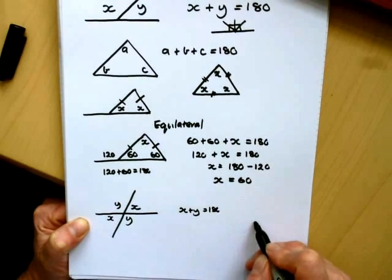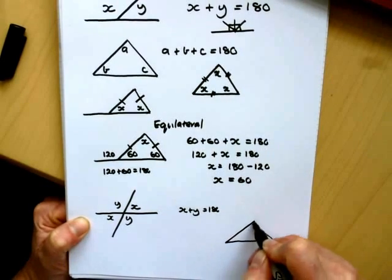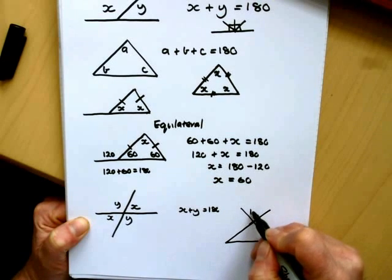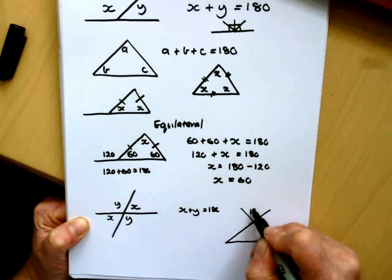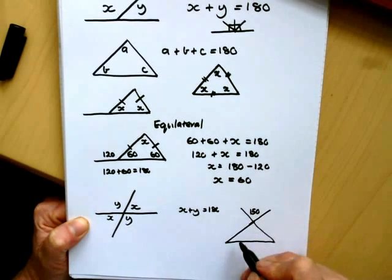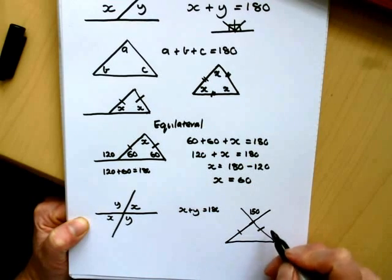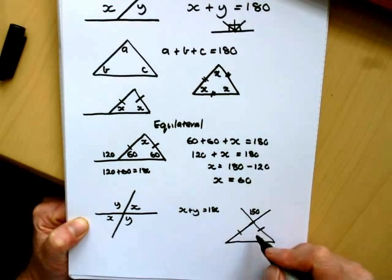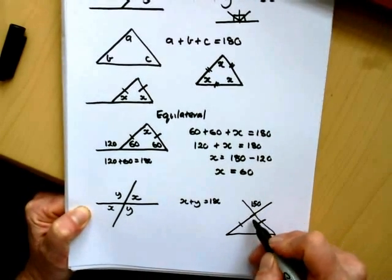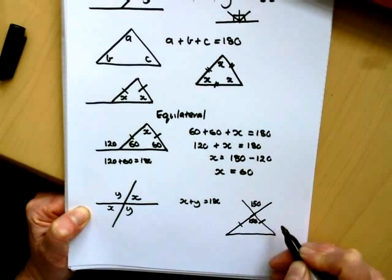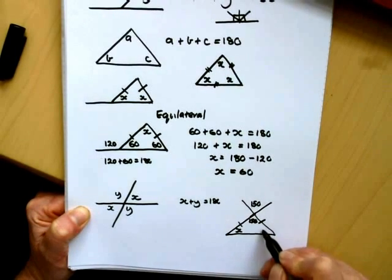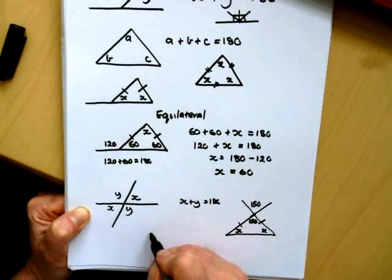So here's an example of where that could help us. So this angle is 150, and this is isosceles. I can find all the angles inside the isosceles triangle. So this is an opposite angle, which makes us 150. So I've got these two angles, I don't know them yet, but I know that they're the same.